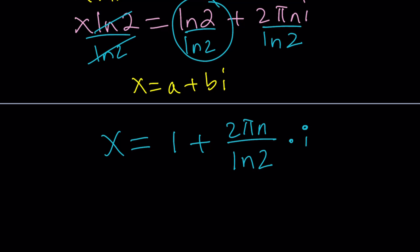But take a look at the values of n. n is an integer. So it can be positive, negative, or 0. What happens if n is equal to 0? We end up with x equals 1, which is the very real solution we found at the beginning. Remember?